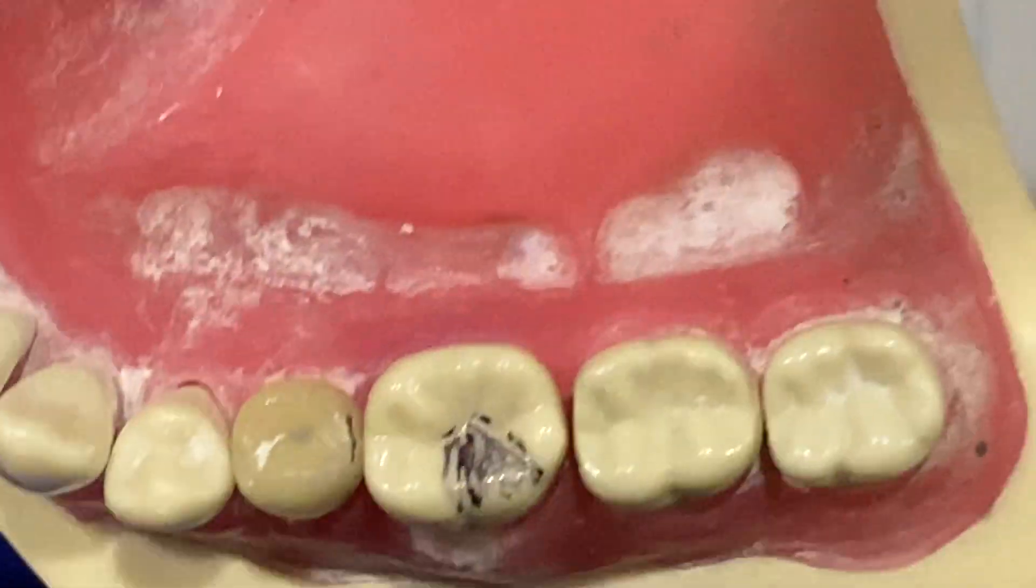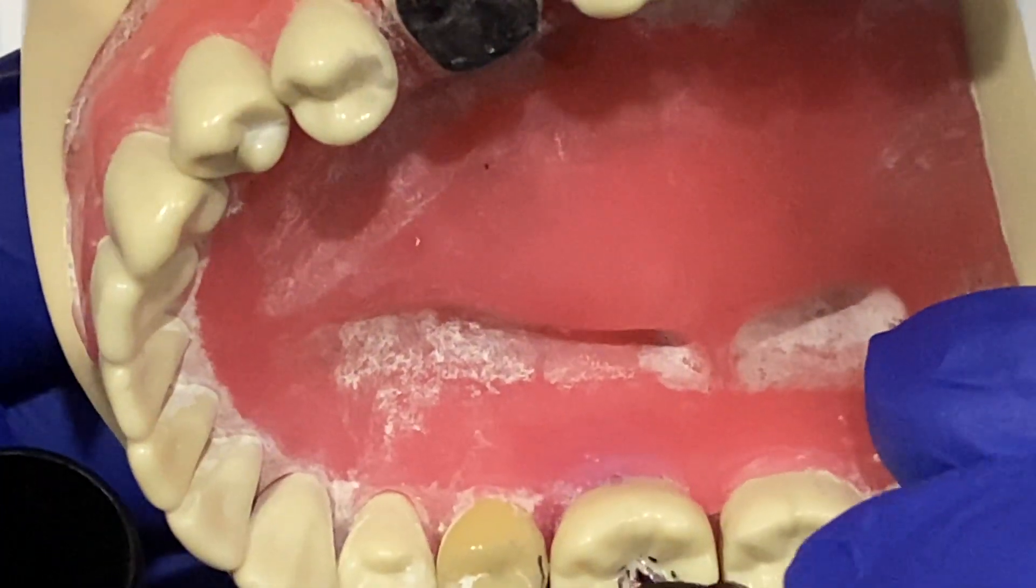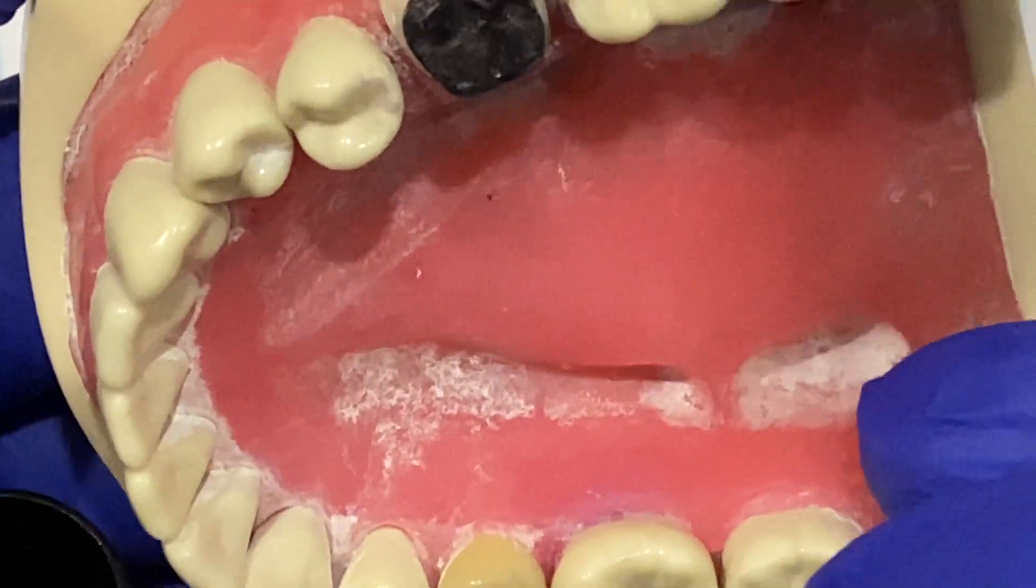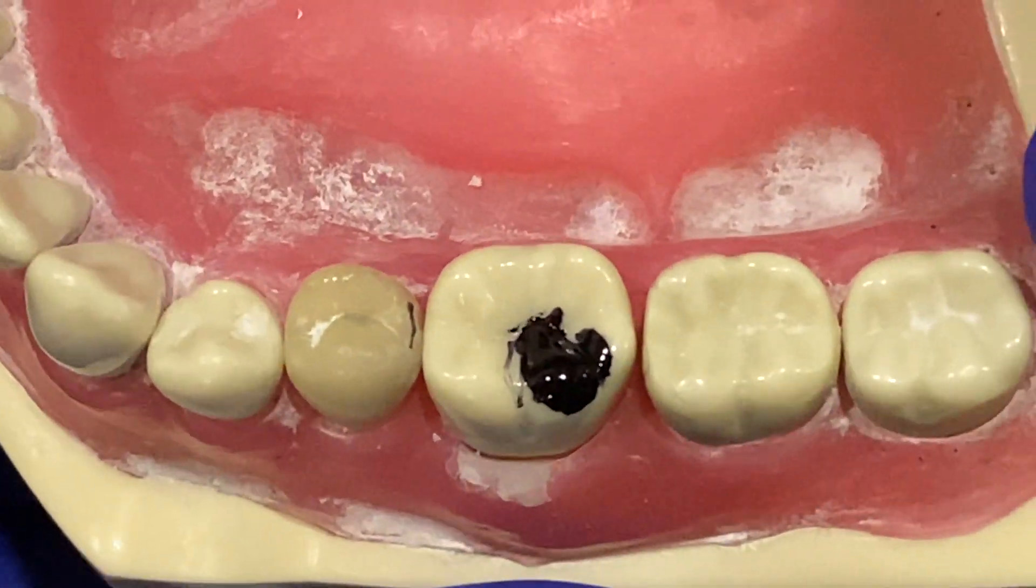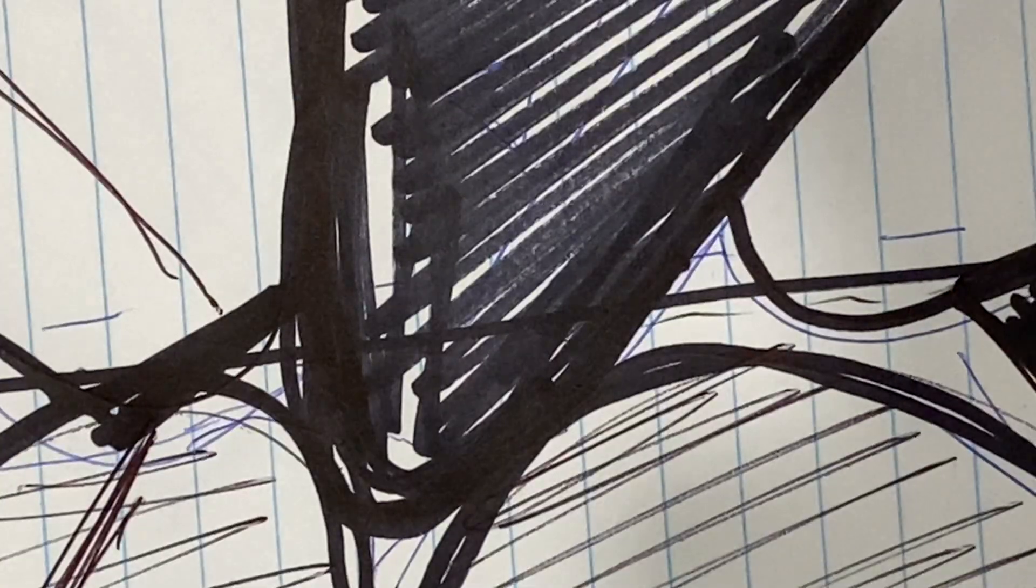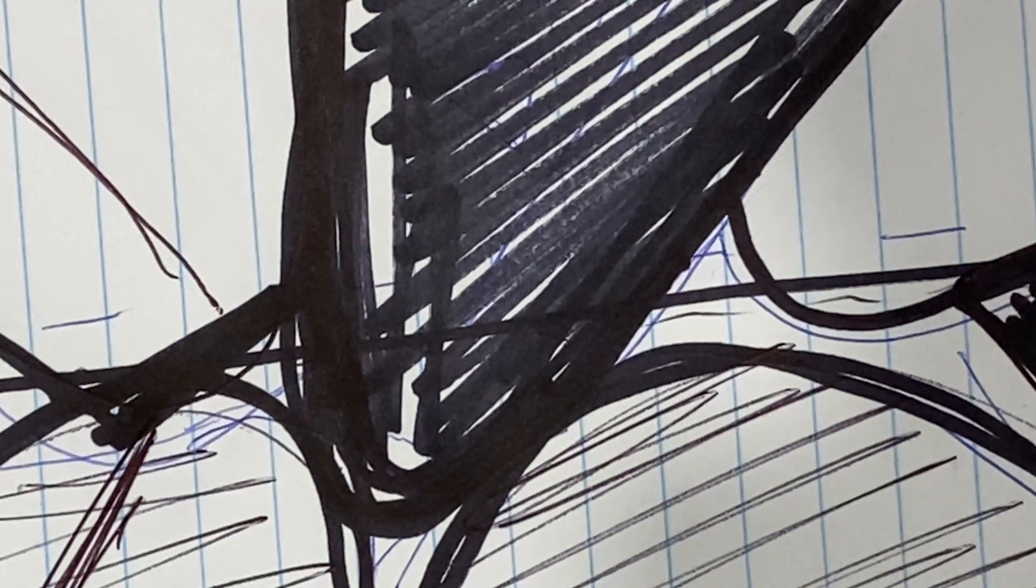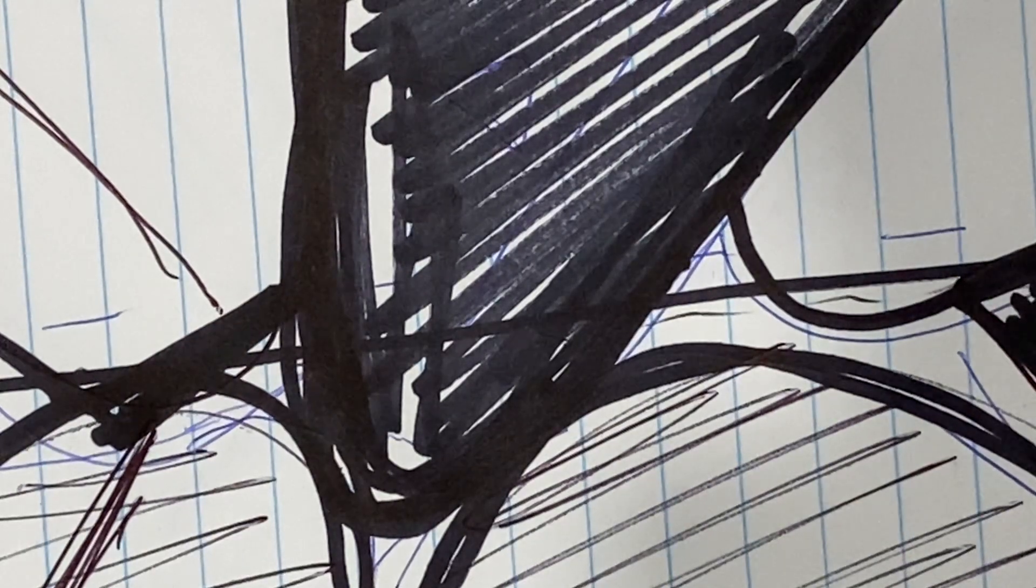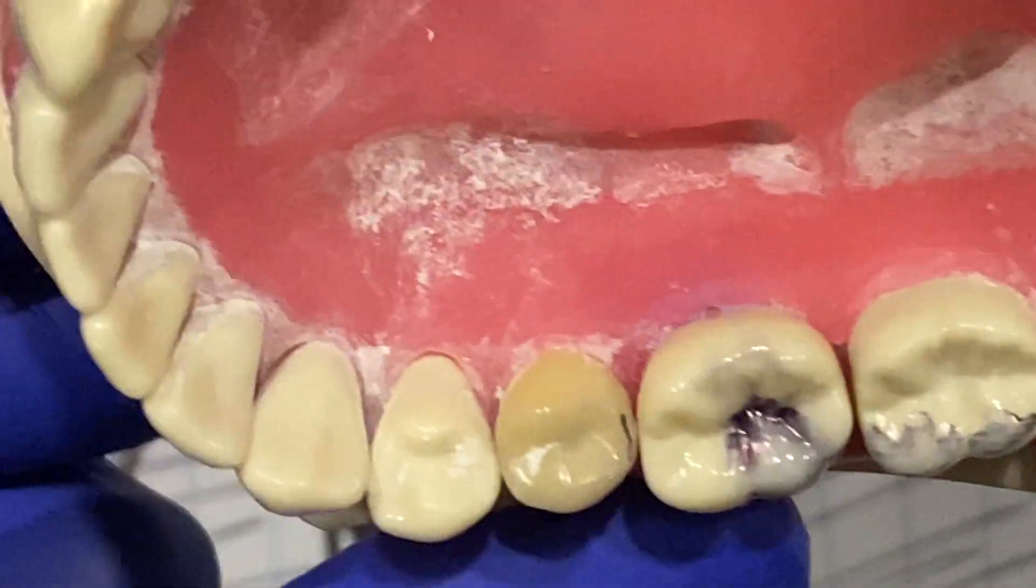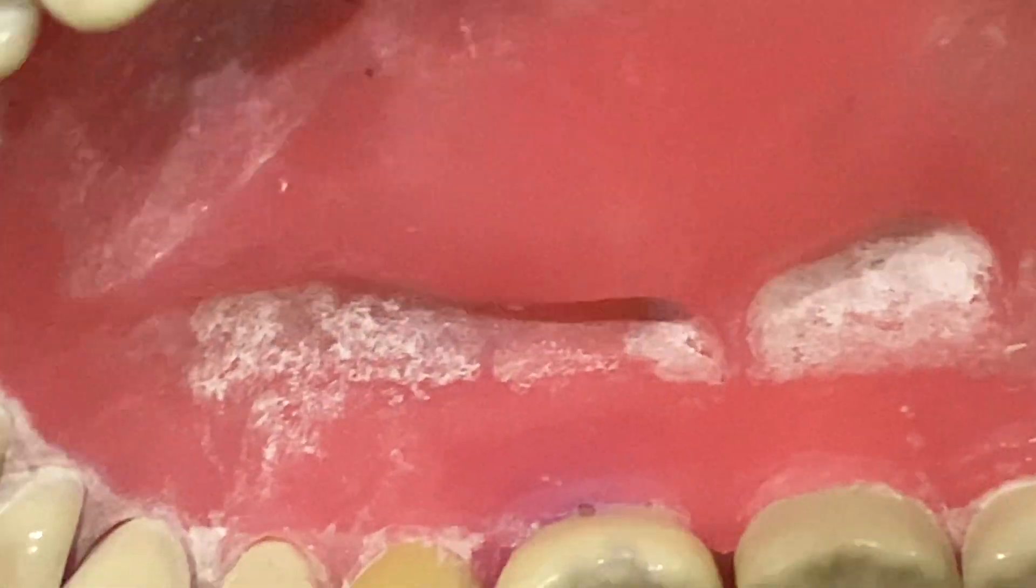If you draw an imaginary line, let me just mark all of that. So if you see the distobuccal, see how much it goes in the center. Look at that.